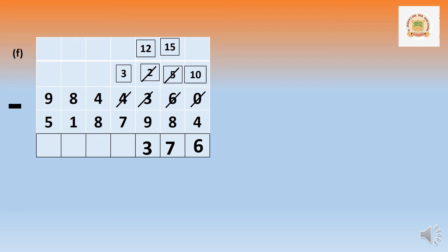Again 3 cannot minus 7 in thousands place. Borrow from 40 thousand — it becomes 30 thousand. After taking, thousands become 13 thousand. Thirteen minus 7 equals 6.